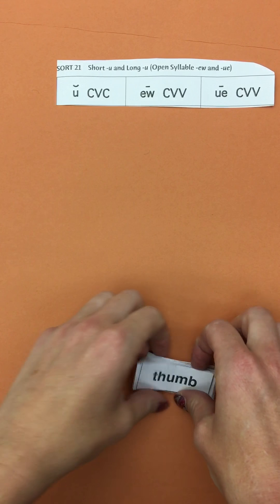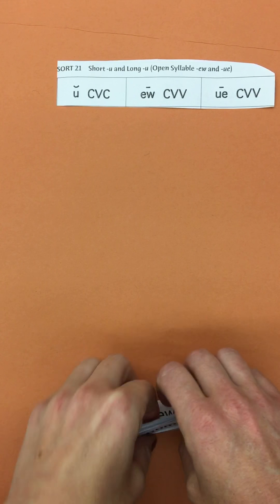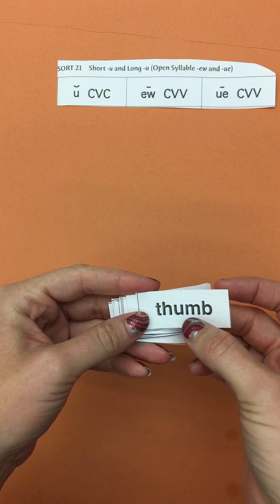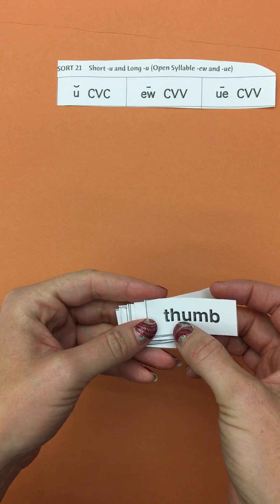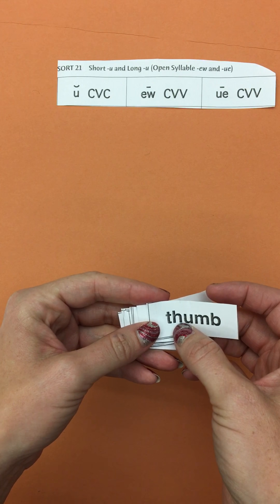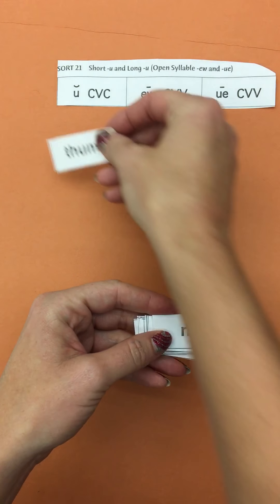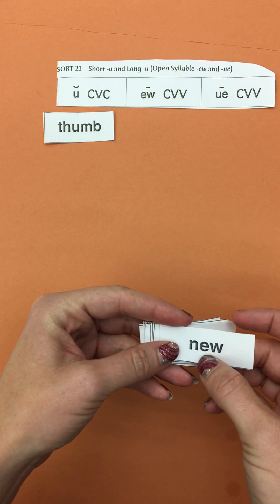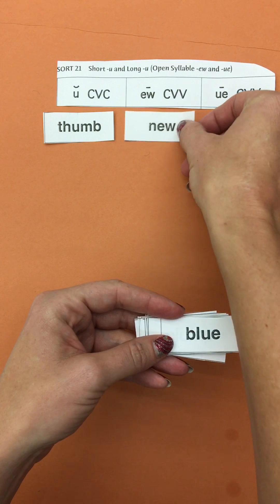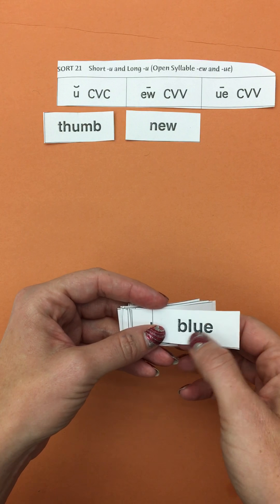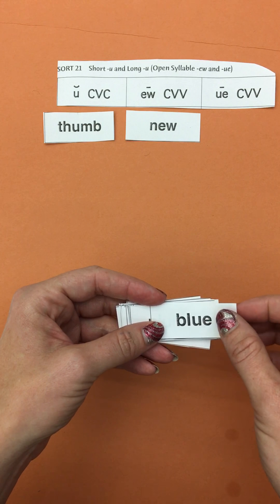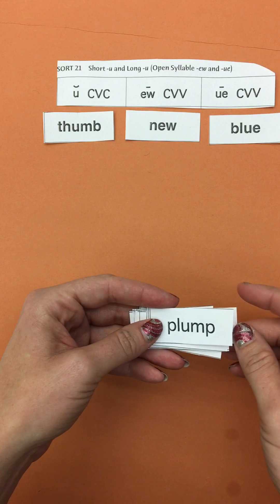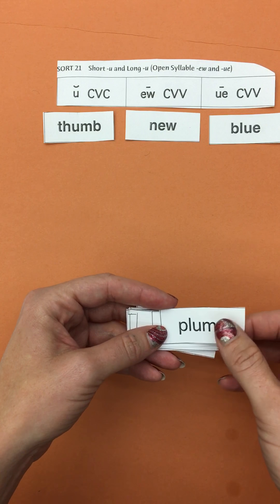Let's sort by the pattern — there are a few oddballs, so let's look out for them. This one has the vowel in the middle with two consonants on either side, so that is a short U. This one has the EW pattern, like 'new,' and this one is 'blue' — the 'ooh' sound at the end of the syllable makes it an open syllable.